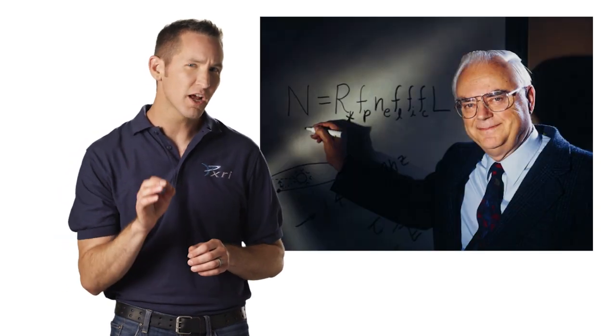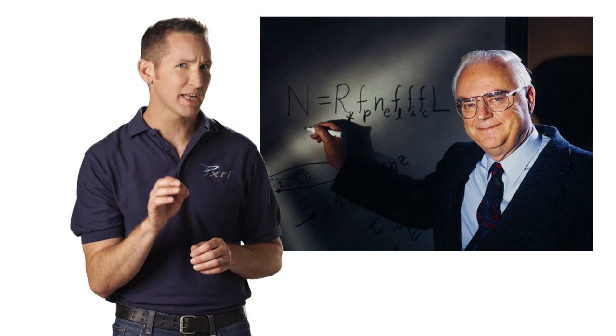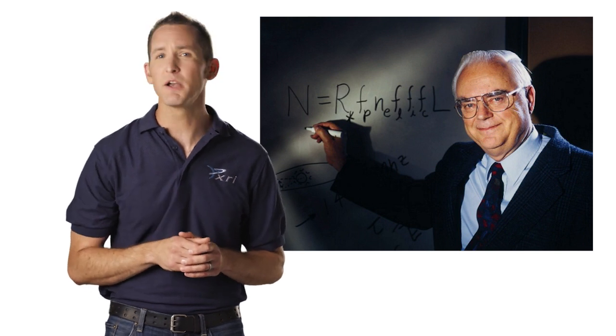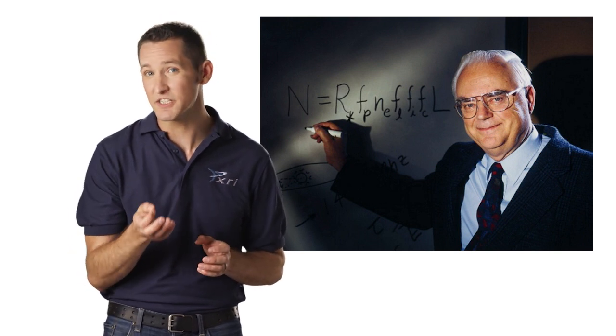Back in the 1960s, an astronomer by the name of Frank Drake wrote an equation that we can use to help us discover not just the number of planets with life in our galaxy, but the number of planets with civilizations and intelligent life.